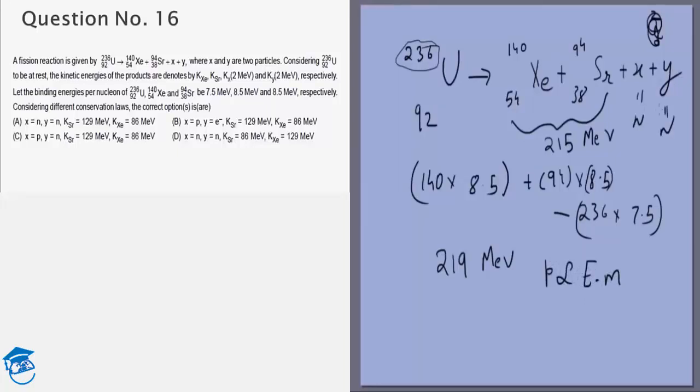We know the energy of X and Y is 2 mega electron volts. That is, the energy is smaller than the energy of these two. Also, the mass of X and Y are smaller than the mass of these. So the momentum of X and Y has to be much smaller than the momentum of these. So we will neglect the momentum of X and Y for now.